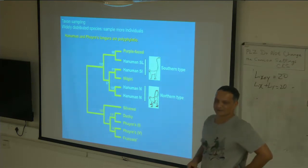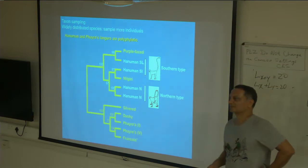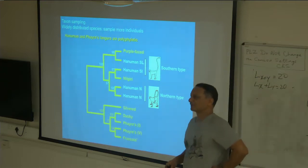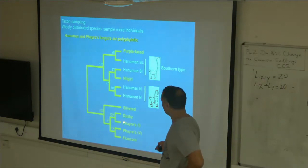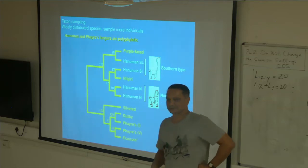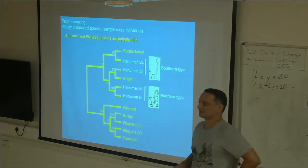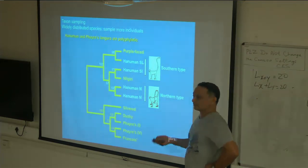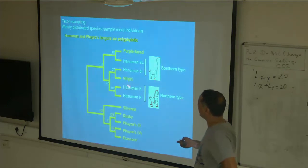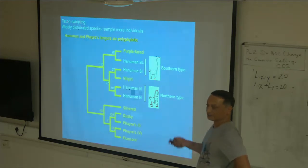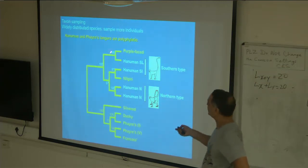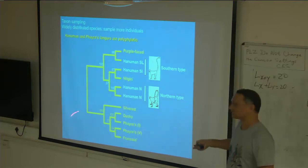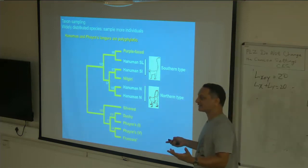Is Trachypithecus monophyletic? These two were thought to be Trachypithecus, but they are not branching with Trachypithecus — so it's polyphyletic. It's convergence in this case. These two species share many characters with Southeast Asian langurs; it turns out they occupy similar habitats. Hanuman langur is largely in dry areas, whereas these two are in evergreen forest — as is the case with Southeast Asian langurs. It is a classic case of convergence.